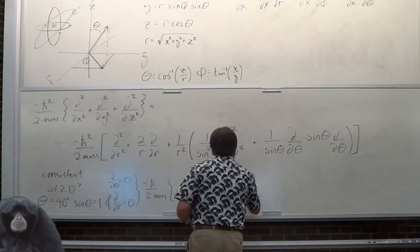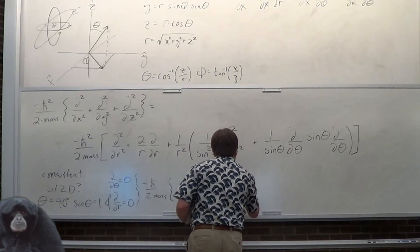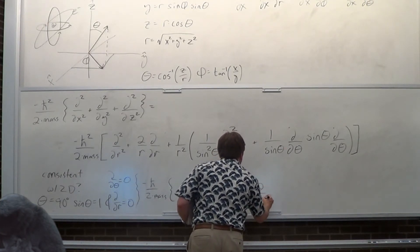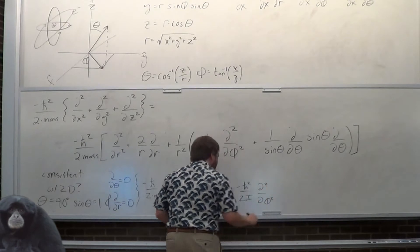It ends up being minus hbar squared over 2I times the double derivative with respect to phi.